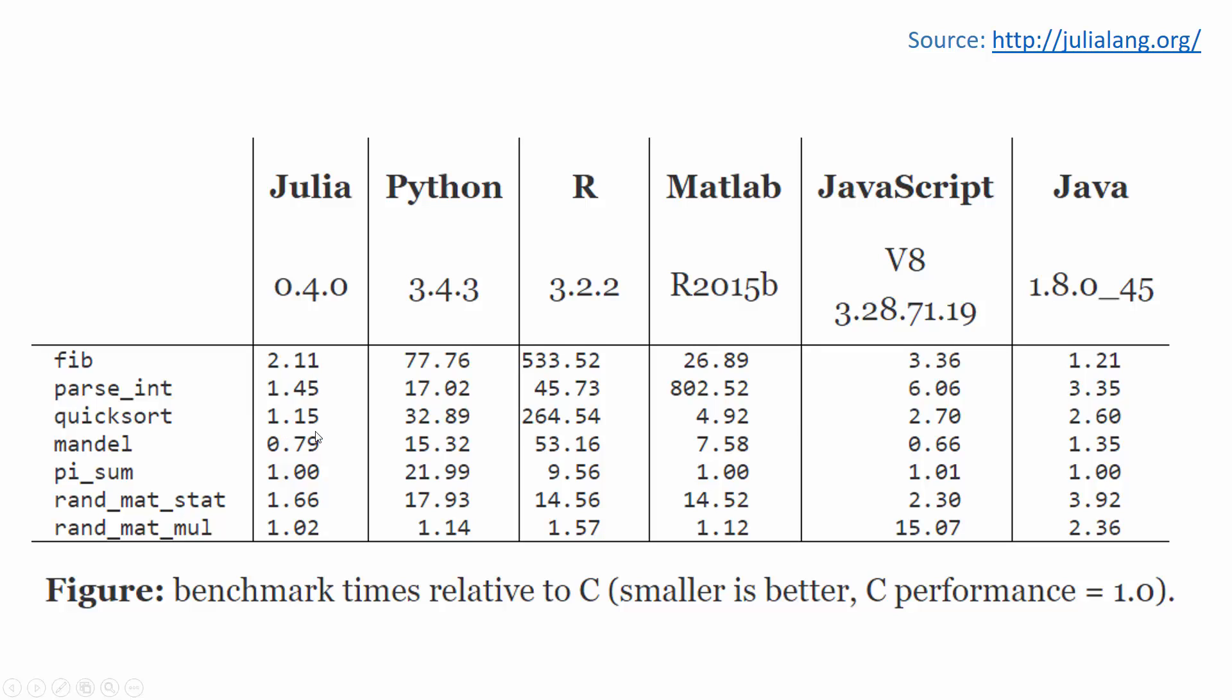If you compare that with MATLAB it is super slow at 264. Python is also slow and JavaScript and Java are reasonably faster, but still Julia clearly wins here. You can go to julialang.org website and look at the complete chart for all the benchmarking results.